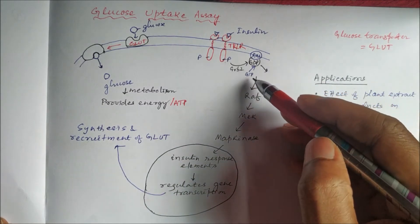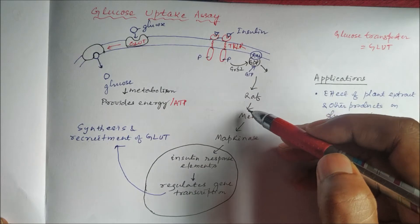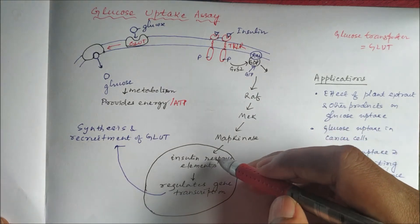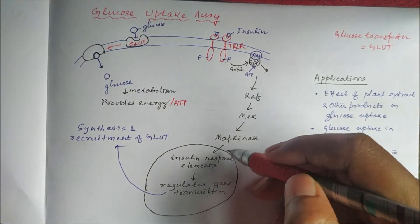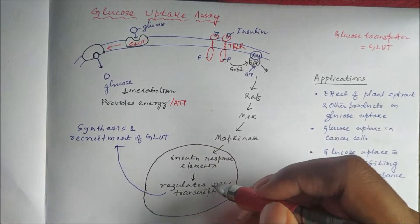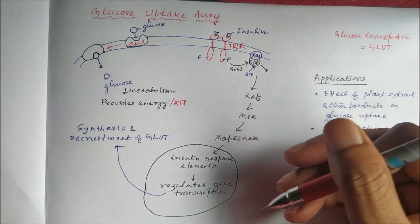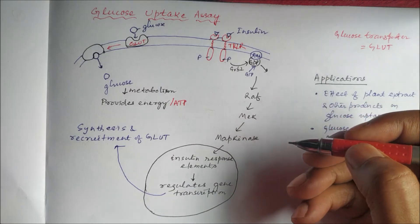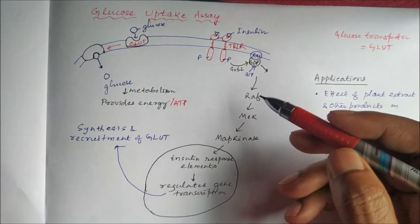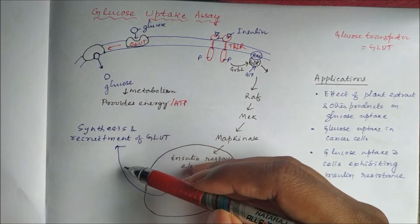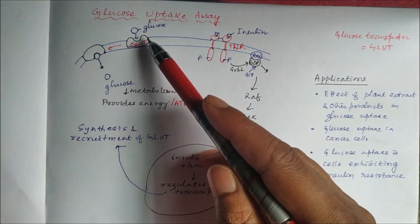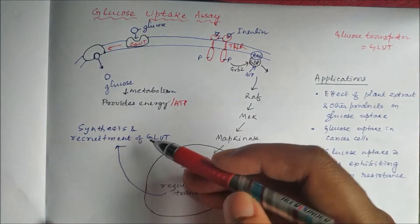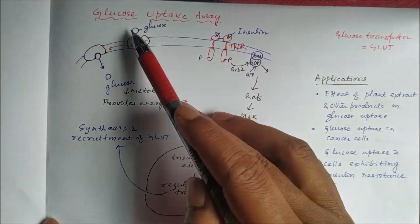That phosphate is then transferred to RAF, which transfers it to MEK, and MEK transfers it to MAP kinase. MAP kinase enters into the nucleus and activates insulin response elements, which regulate the gene transcription of many enzymes involved in glucose metabolism — including gluconeogenesis, glycogenesis, and glycogenolysis. In addition, it also synthesizes and recruits the glucose transporter on the cell membrane. This is how insulin helps in glucose transport through GLUT.